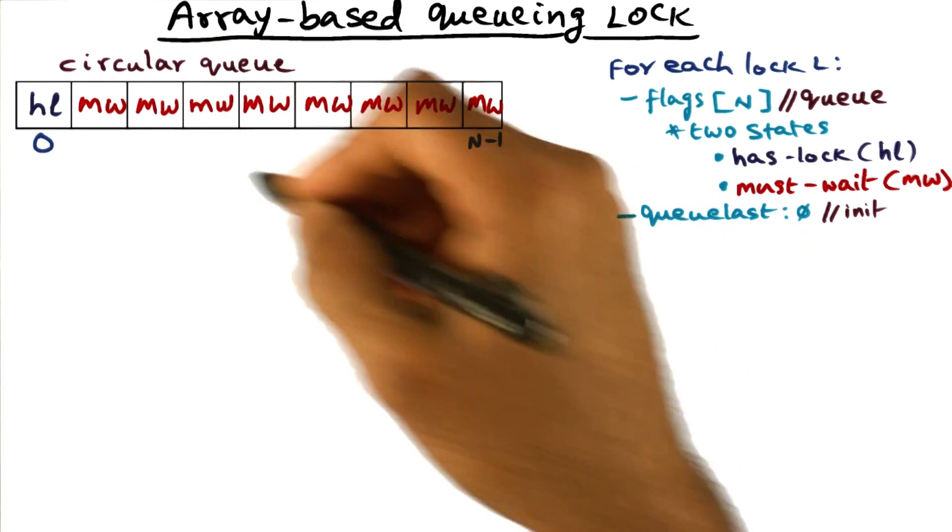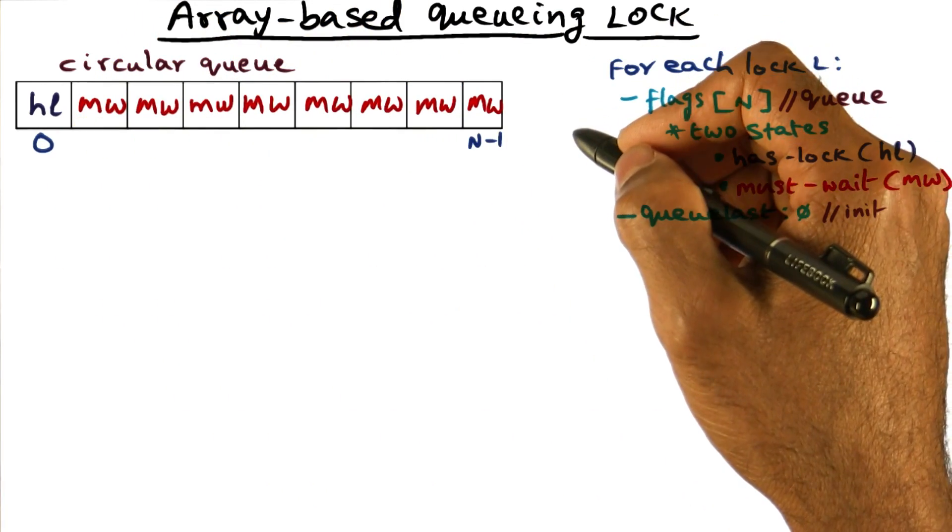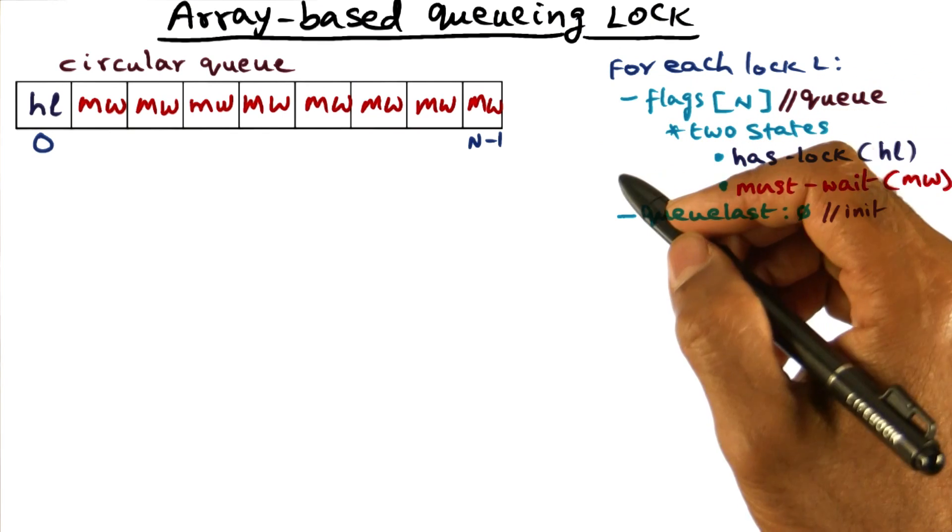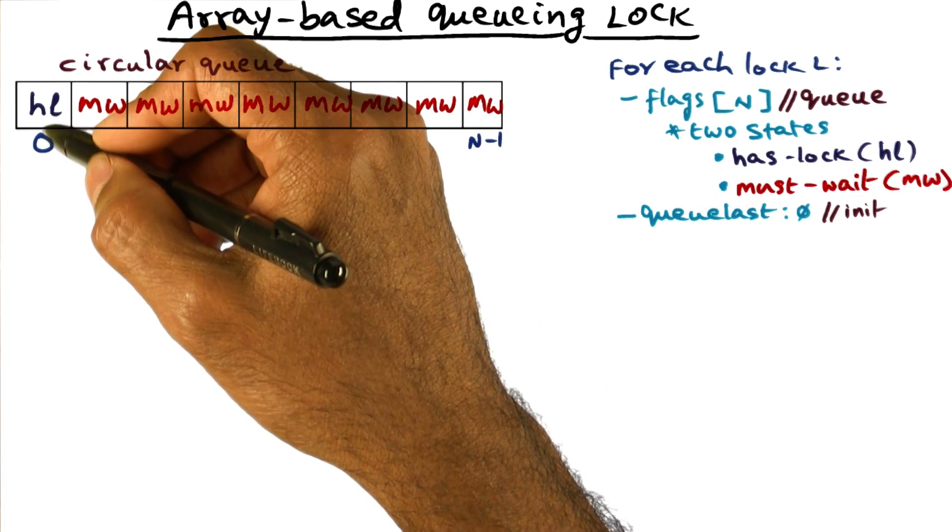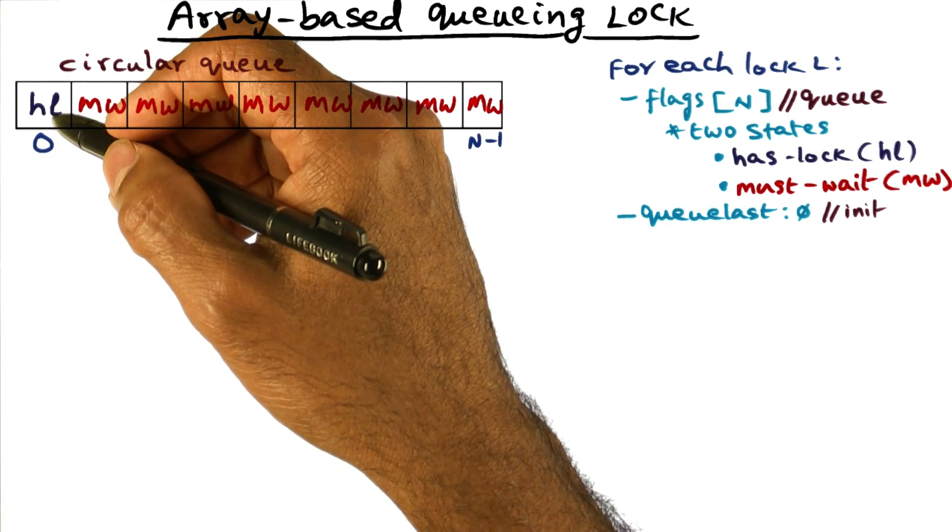As you can see, since there is no lock request yet, we just initialized the queue. The first guy that comes around to ask for the lock will get it. And he will queue himself here, and he'll get the lock as well.